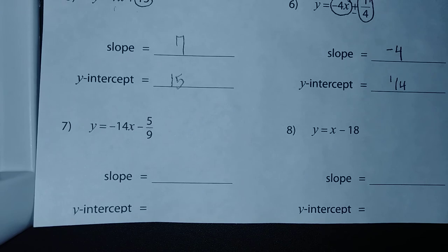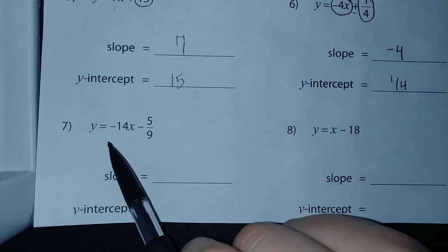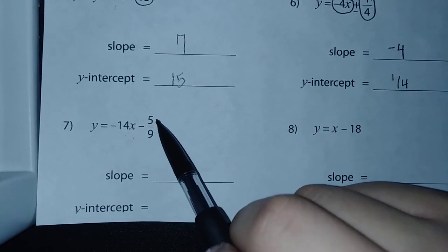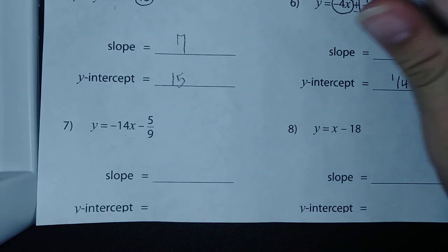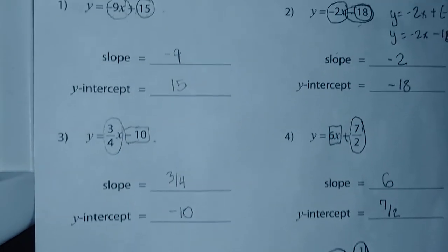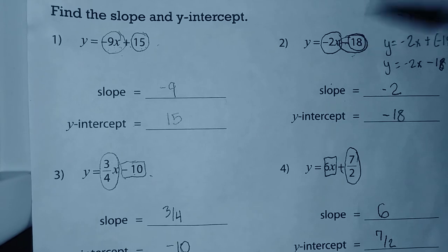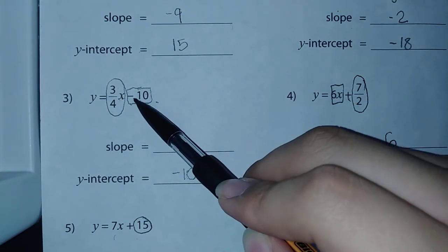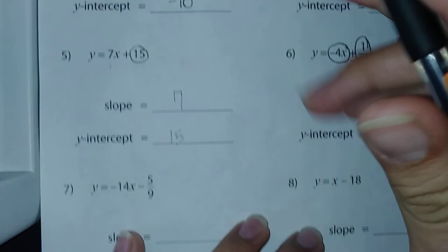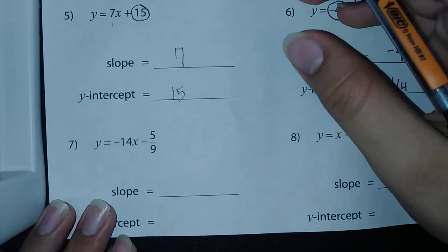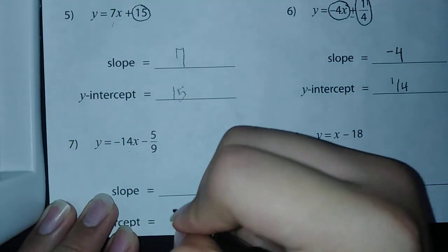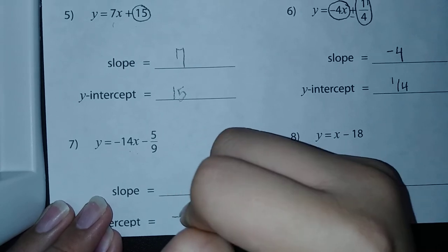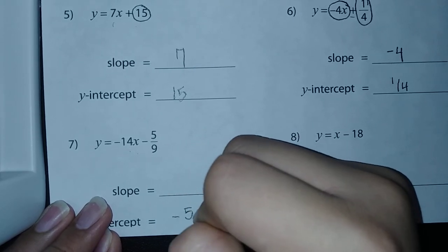Number seven: y = -14x - 4/9. Just like the previous examples with a minus sign, when we have a minus sign next to the constant the y-intercept is negative. So our y-intercept is going to be -4/9.